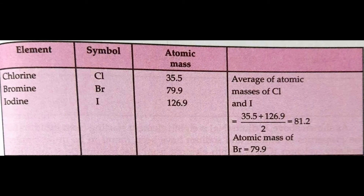There is another important triad of elements — chlorine, bromine, and iodine. These also have similar properties, and the atomic mass of the middle element bromine is 79.9 u, which is nearly the same as the average of 81.2 u of the atomic masses of chlorine and iodine. These elements are called halogens because they react with metals to form salts — 'halo' meaning salt and 'gene' meaning producer.